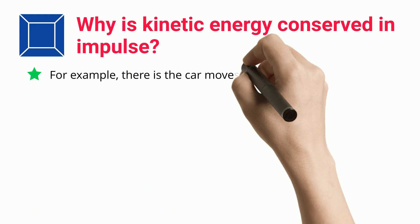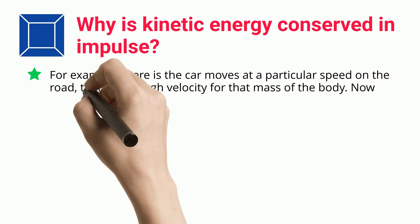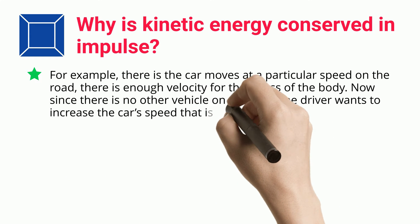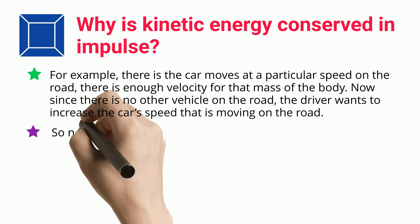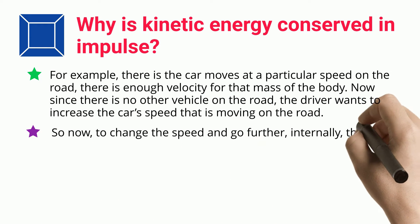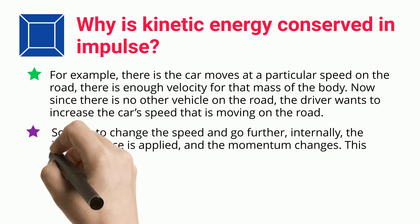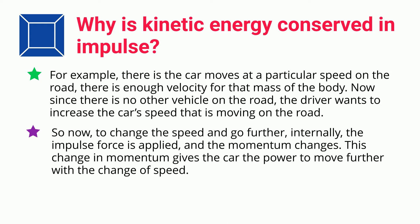For example, a car moves at a particular speed on the road; there is enough velocity for that mass of the body. Now since there is no other vehicle on the road, the driver wants to increase the car's speed. To change the speed and go further, internally, the impulse force is applied and the momentum changes. This change in momentum gives the car the power to move further with the change of speed.